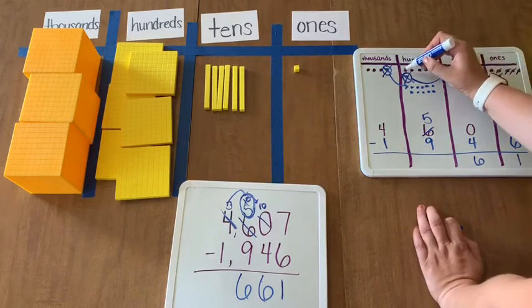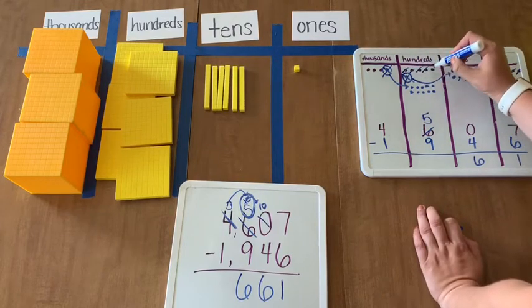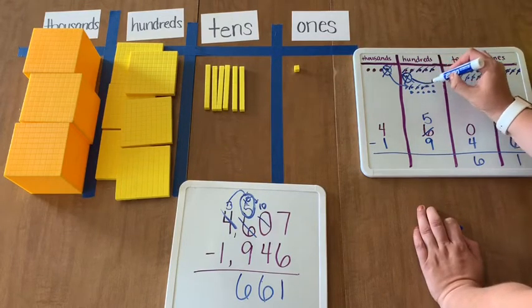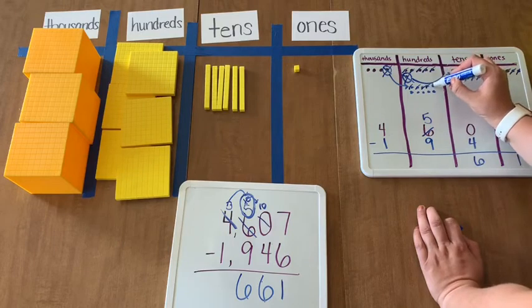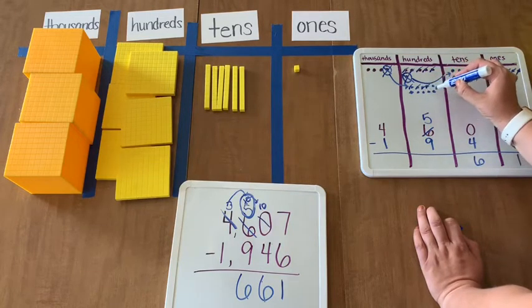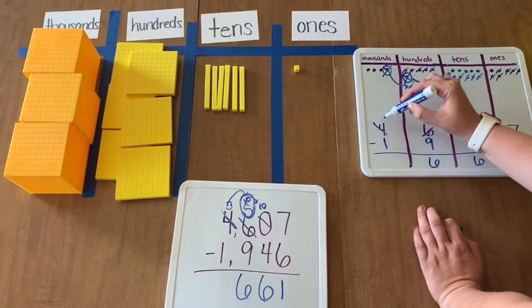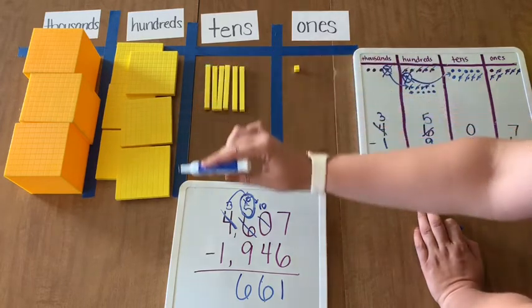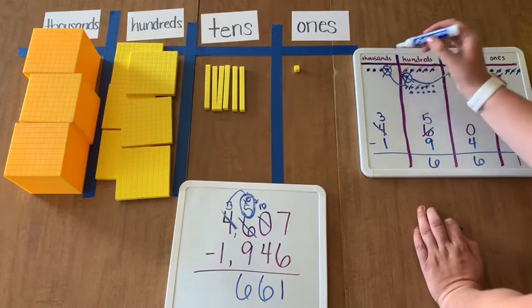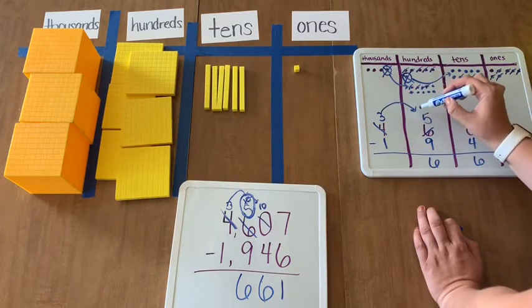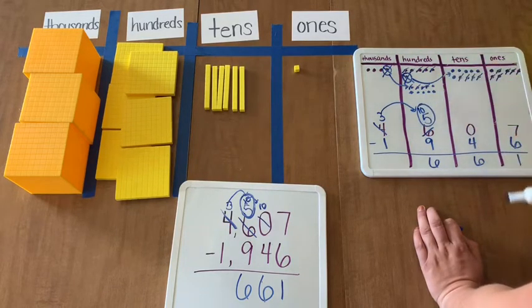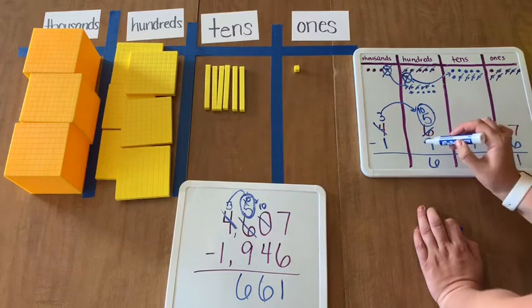Now I can take away 9. 1, 2, 3, 4, 5, 6, 7, 8, 9. And I have 1, 2, 3, 4, 5, 6 left. Because I regrouped from the thousands, there are now 3 thousands left. 1, 2, 3 thousands. And I regrouped 10 more over here, making it 15 minus 9.